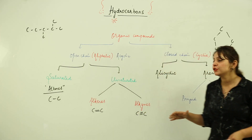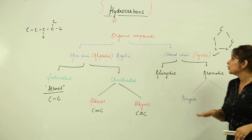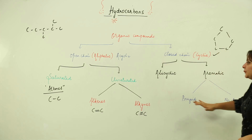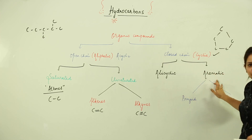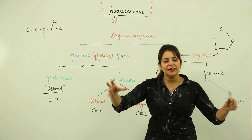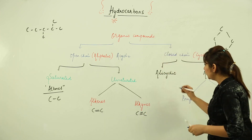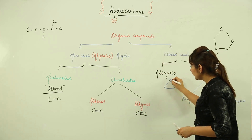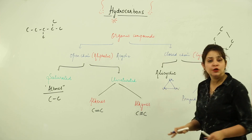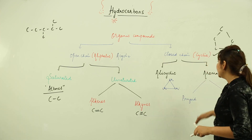So for acyclic compounds, we classify them as saturated alkanes, and unsaturated as alkenes with double bonds and alkynes with triple bonds. Now moving on to the divisions of the cyclic category: cyclic compounds have a ring-like structure and are divided into two types — alicyclic and aromatic. Alicyclic compounds are those in which carbon atoms of a straight chain are connected to each other to form a ring.